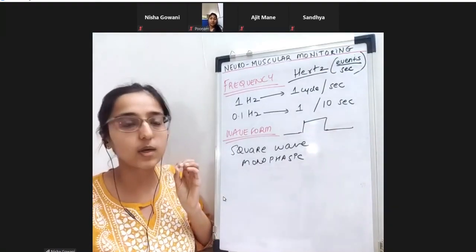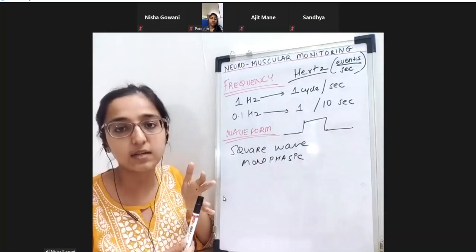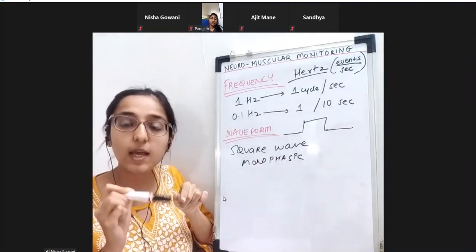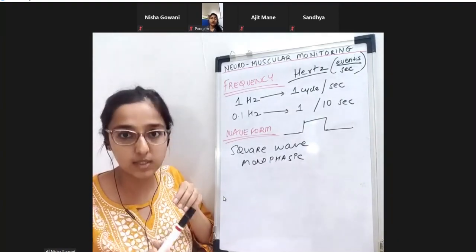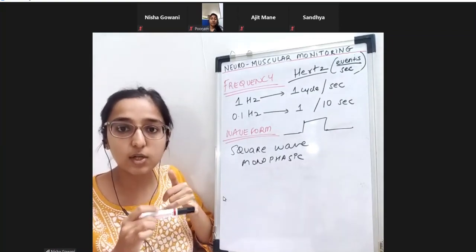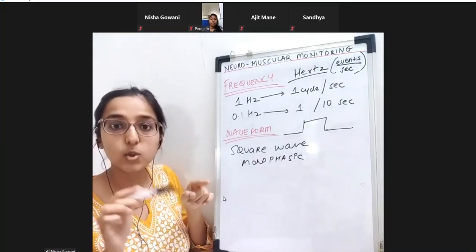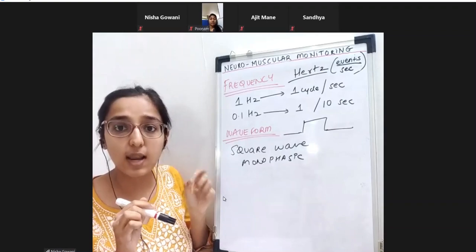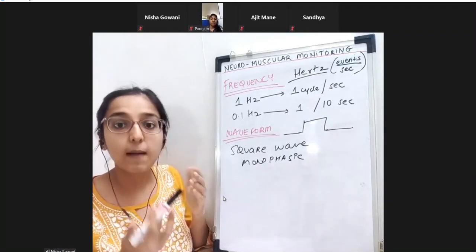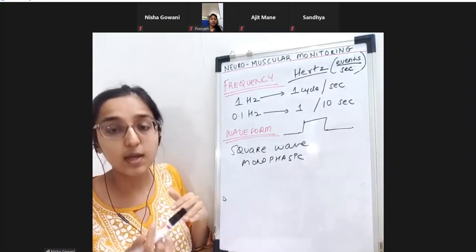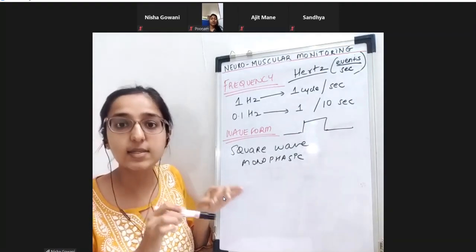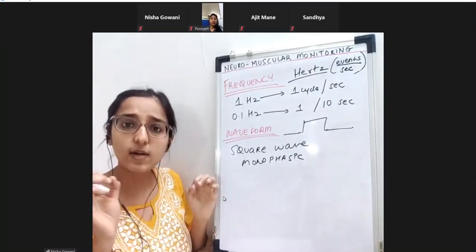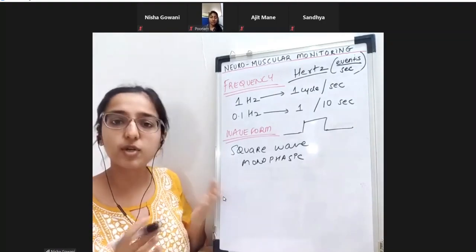On the nerve stimulator, there is a small screen where you can see how much current and what frequency you are delivering. Every nerve stimulator should have a visual display so the operator can monitor it. Some stimulators also have an alarm - if you set 30 mA but the stimulator is delivering more or less, the alarm will alert you that there is something wrong with the device or the circuit.